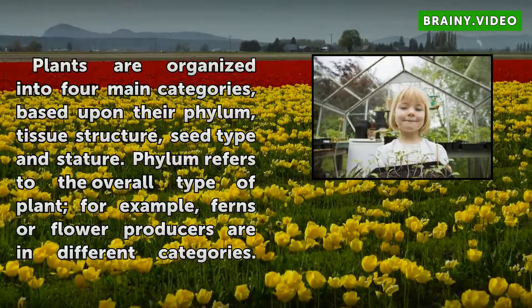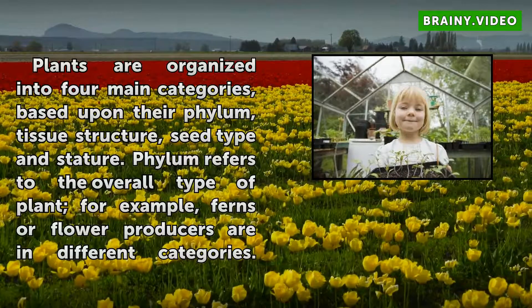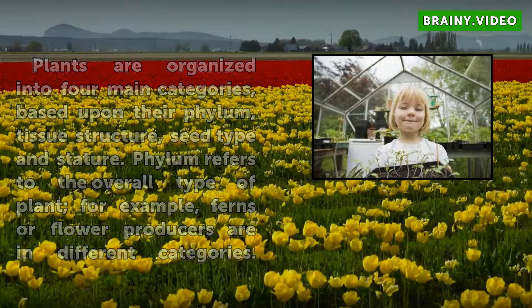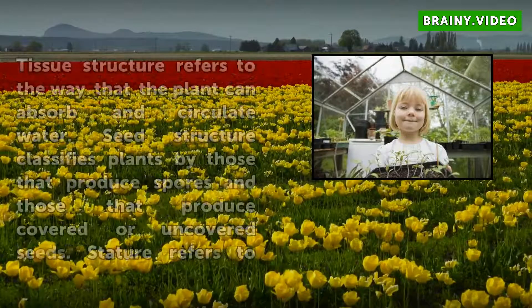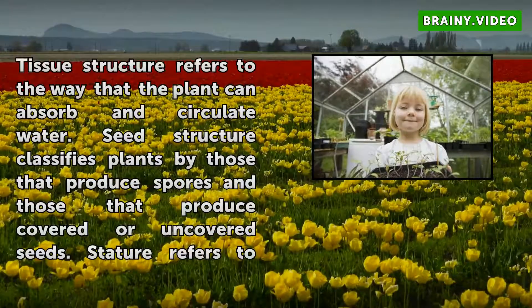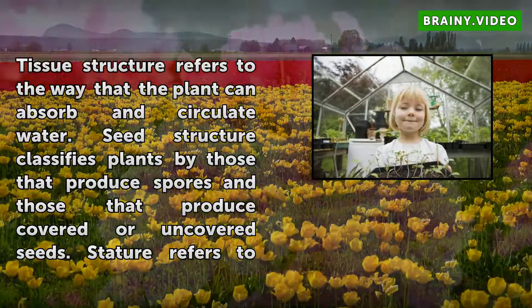Phylum refers to the overall type of plant. For example, ferns or flower producers are in different categories. Tissue structure refers to the way that the plant can absorb and circulate water.